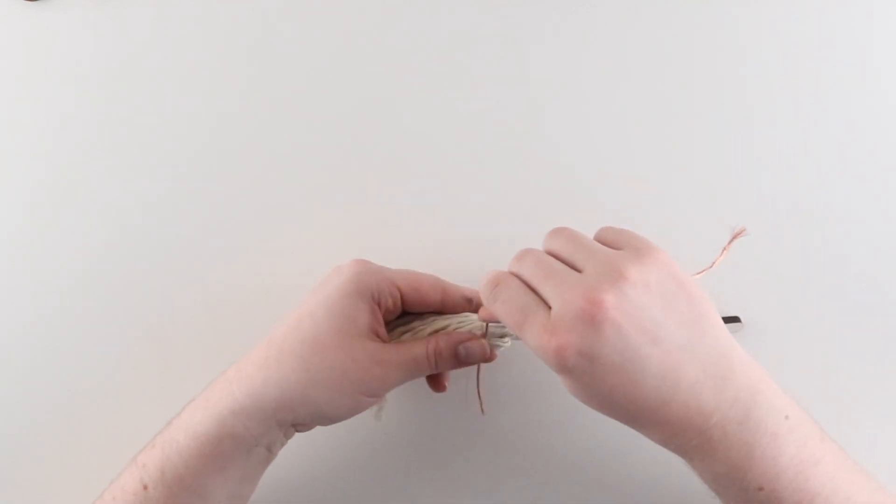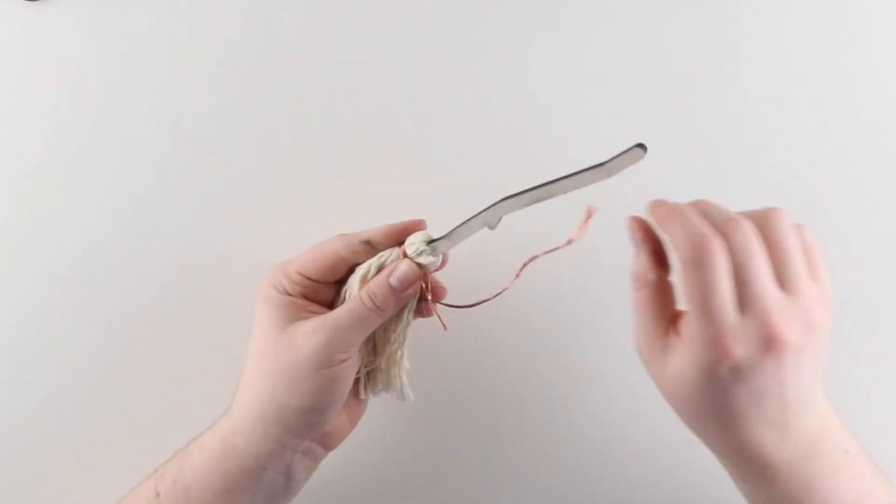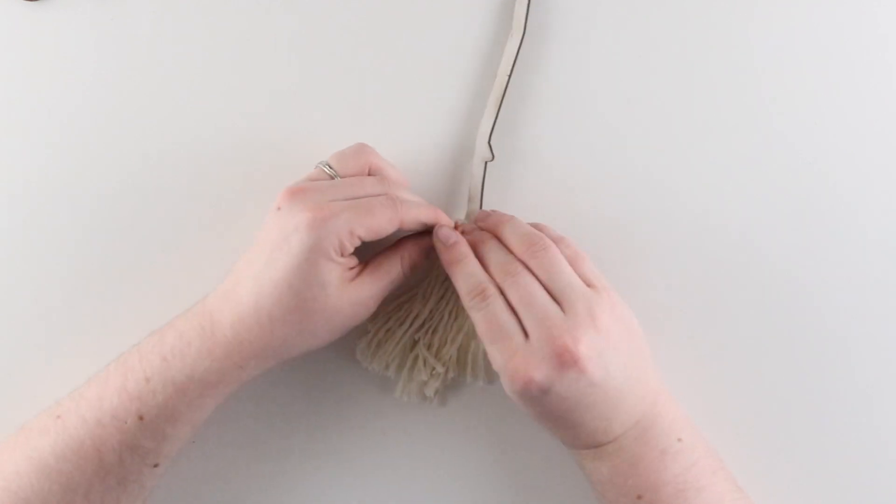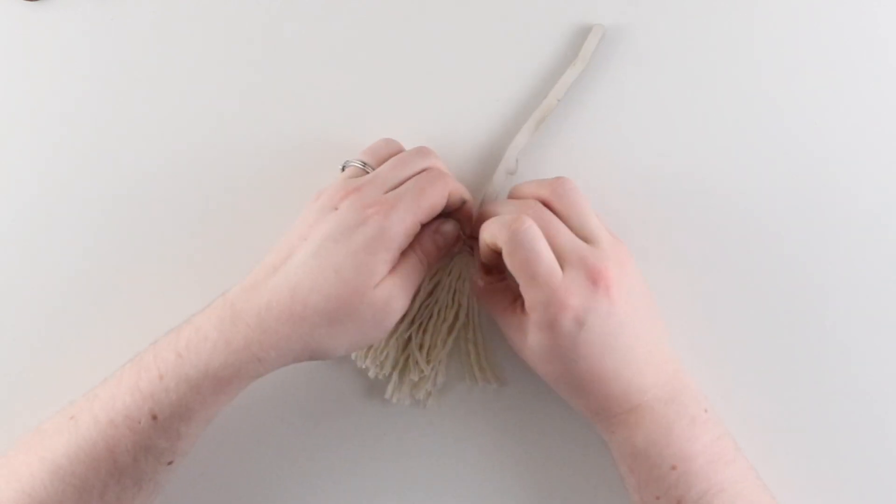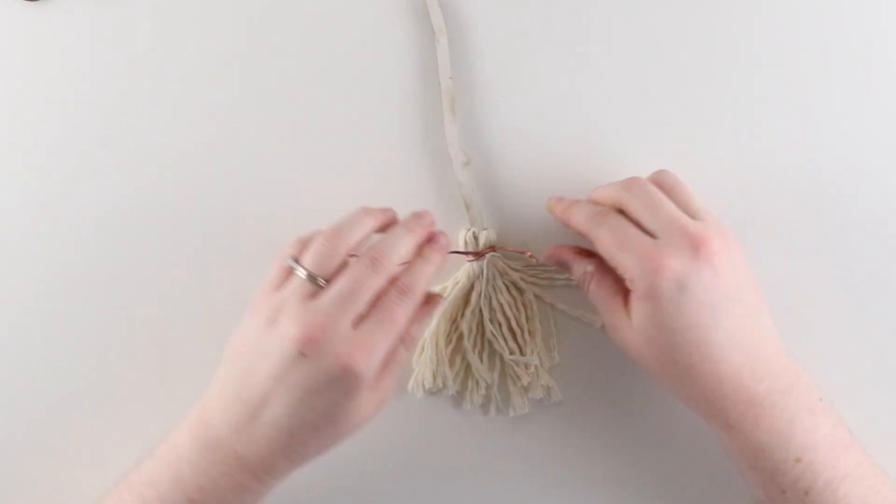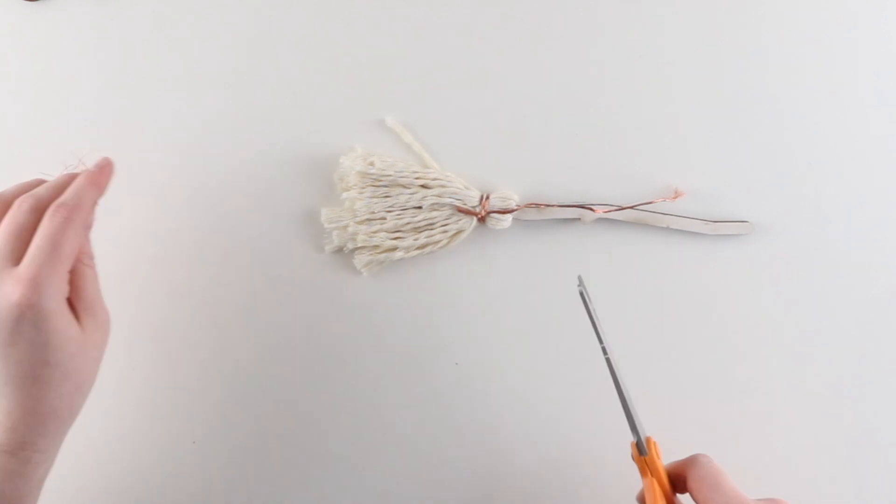Now we're going to wrap the copper around the broom twice and tie it in a knot on the back to make sure it stays in place. I just knotted this once instead of twice to make sure that it wasn't too bulky. Once it is secure trim off any excess copper with some scissors.